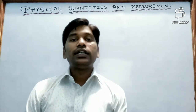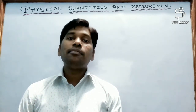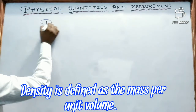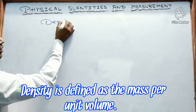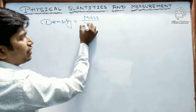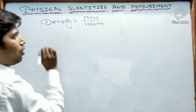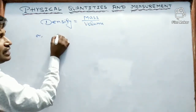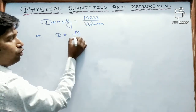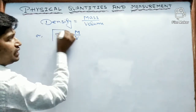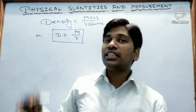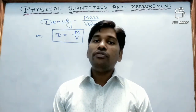So what is density? Density is the mass per unit volume. We can write it as density equals mass by volume, or we can denote density as D equals M divided by V. So density equals mass by volume. This is the mathematical form of density.